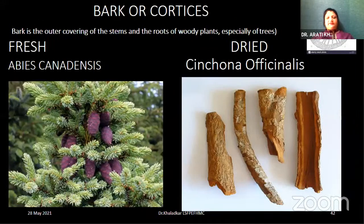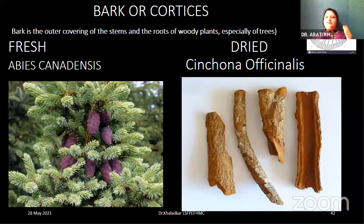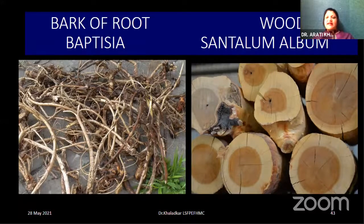Next, the bark — the outer covering of stems and roots especially of woody plants or trees. Again, there are two parts: fresh and dry. For fresh bark, we have Abies canadensis. For dried bark, the birth drug of homeopathy — the first drug proven by our master on himself — Cinchona officinalis. Dry bark is used for its preparation. Next, bark of the root: Baptisia tinctoria, a very good drug for enteric fever. We have an example of wood in the form of Santalum album — Chandan. Then Santalum album wood.